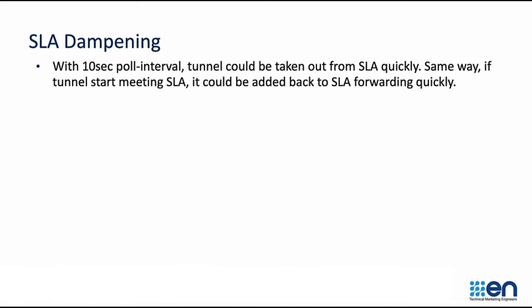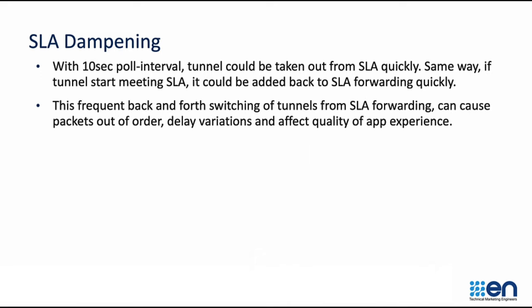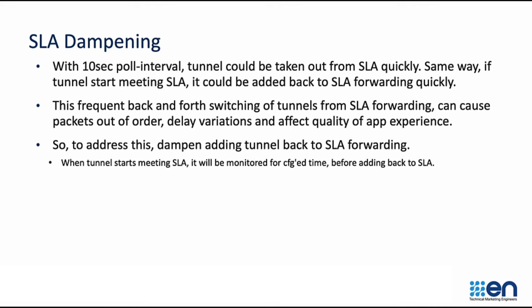Let's look at the last capability: SLA dampening. With the default 10-second poll interval, we could take the tunnel out of forwarding quickly, and similarly if the tunnel starts to meet SLA, it could be added back into SLA forwarding quickly. If you have a WAN circuit that's flapping, this back-and-forth switching of tunnels can cause poor quality of experience for your applications. To address this, we dampen the tunnel by monitoring the stability of the WAN circuit, so we're not adding it back into SLA forwarding too quickly.